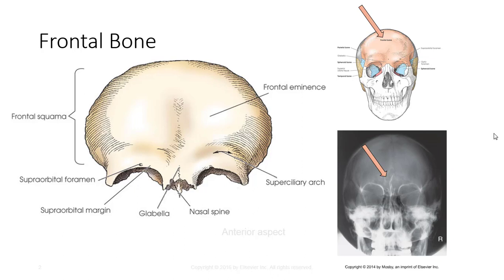Frontal sinuses, as seen in the radiograph, are contained between the two tables of squama on each side of the MSP, which articulate with the right and left parietals, sphenoid, ethmoid, nasal bones, and zygoma.